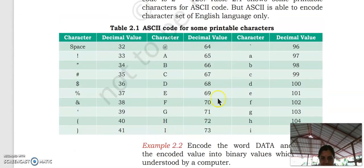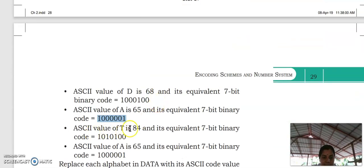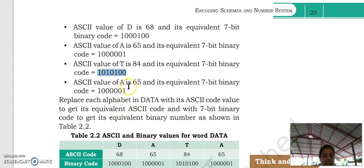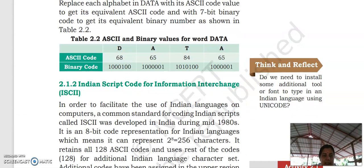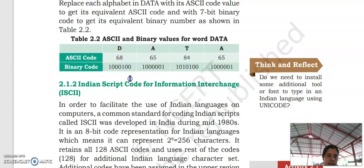The value of capital T is 84, and its corresponding binary digit is this. Again, the value of A is 65, and the corresponding binary digit is this. So by using this representation, the computer will identify what our data is. If you are pressing D, then 68 is the decimal number form and this is the binary code form. These binary codes will be understandable to the computer and the computer will process our information.